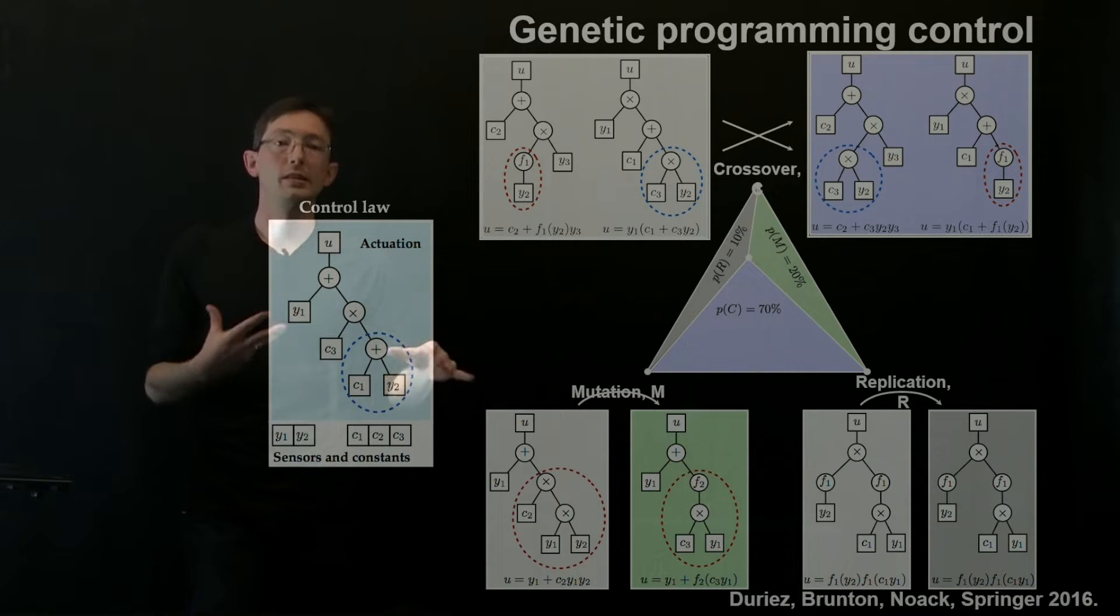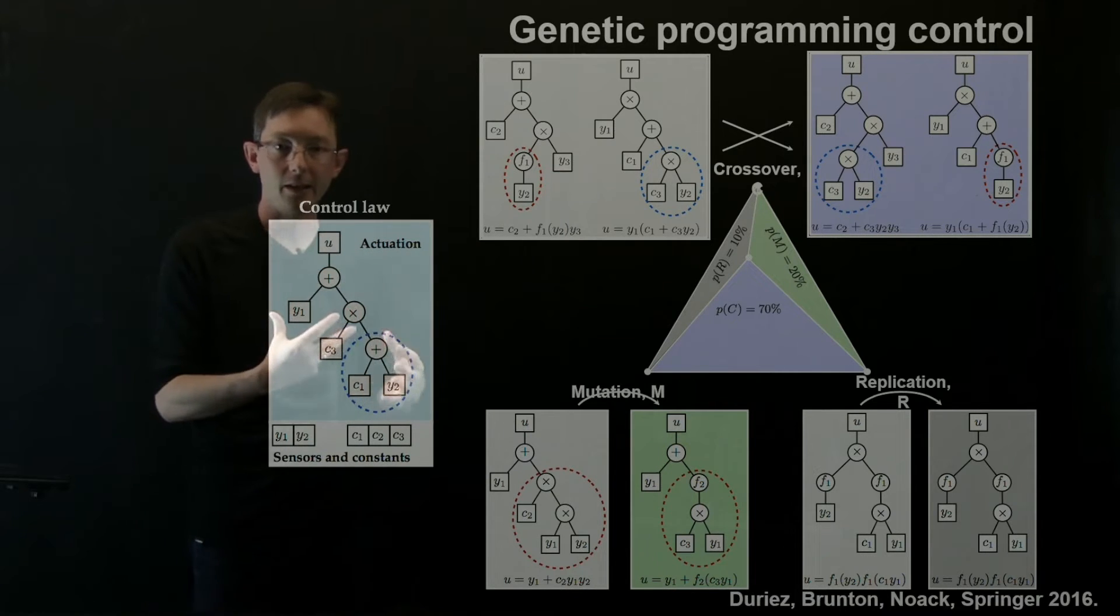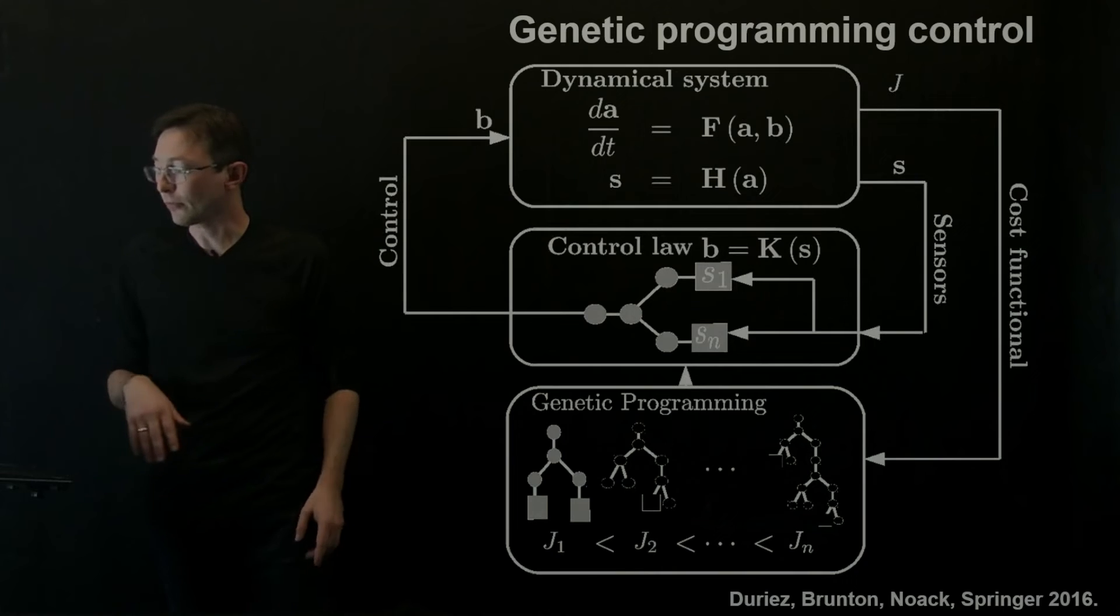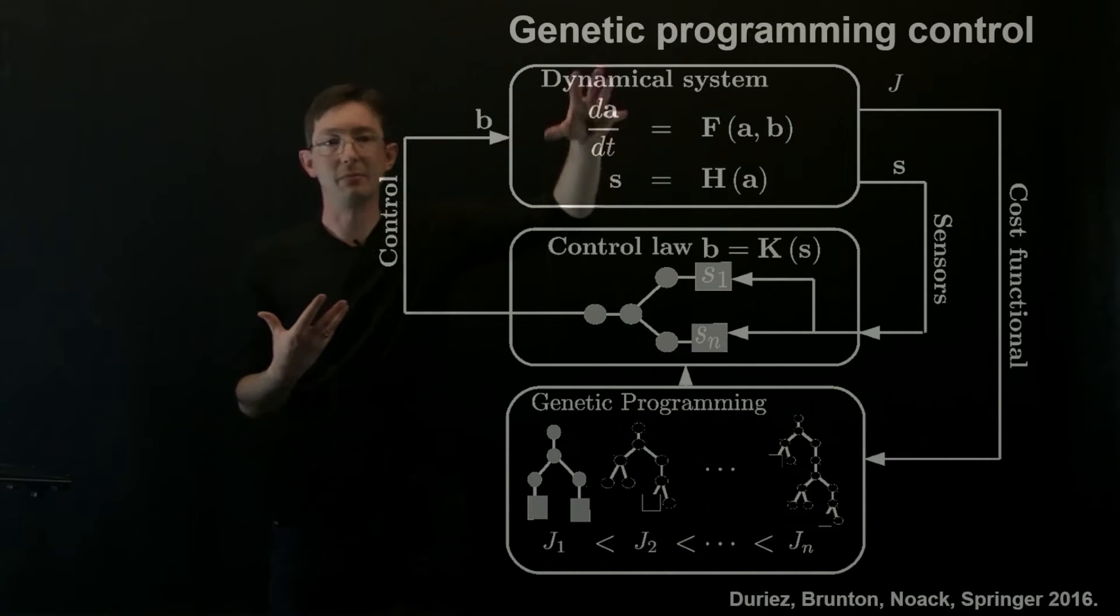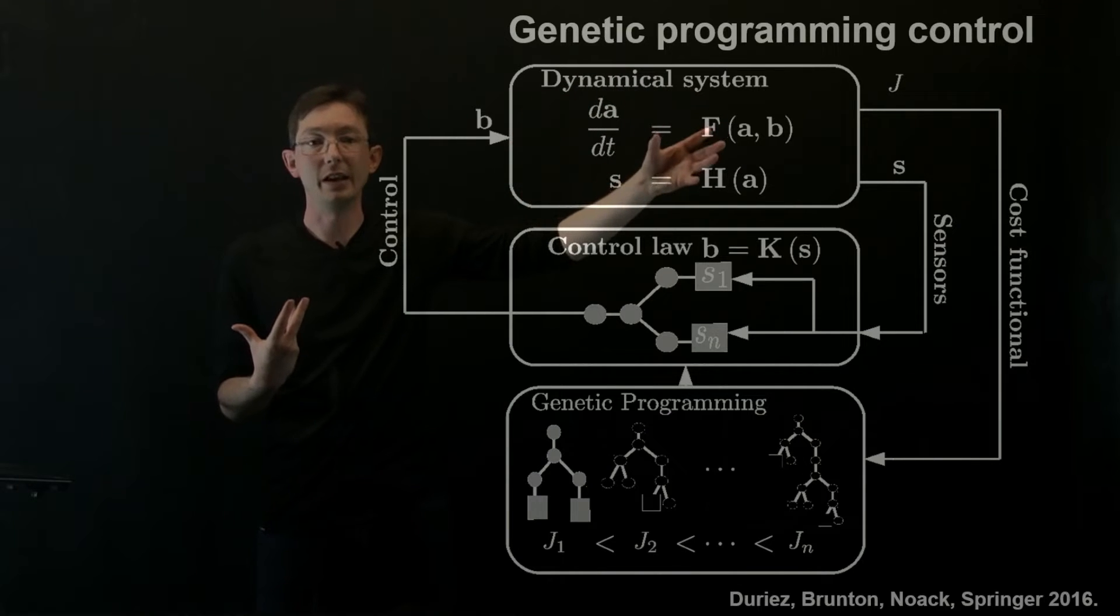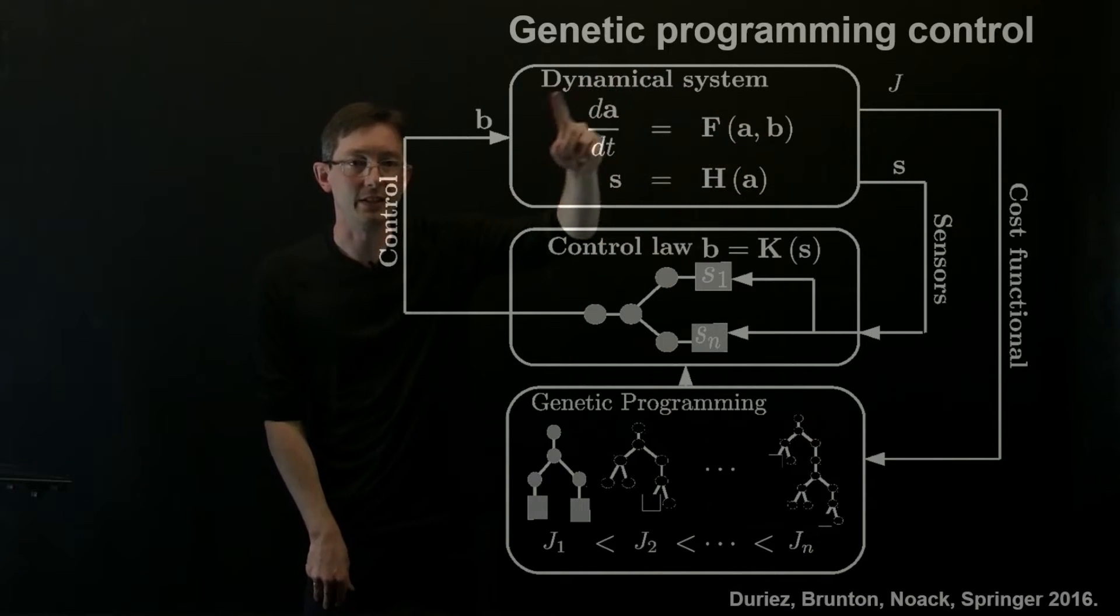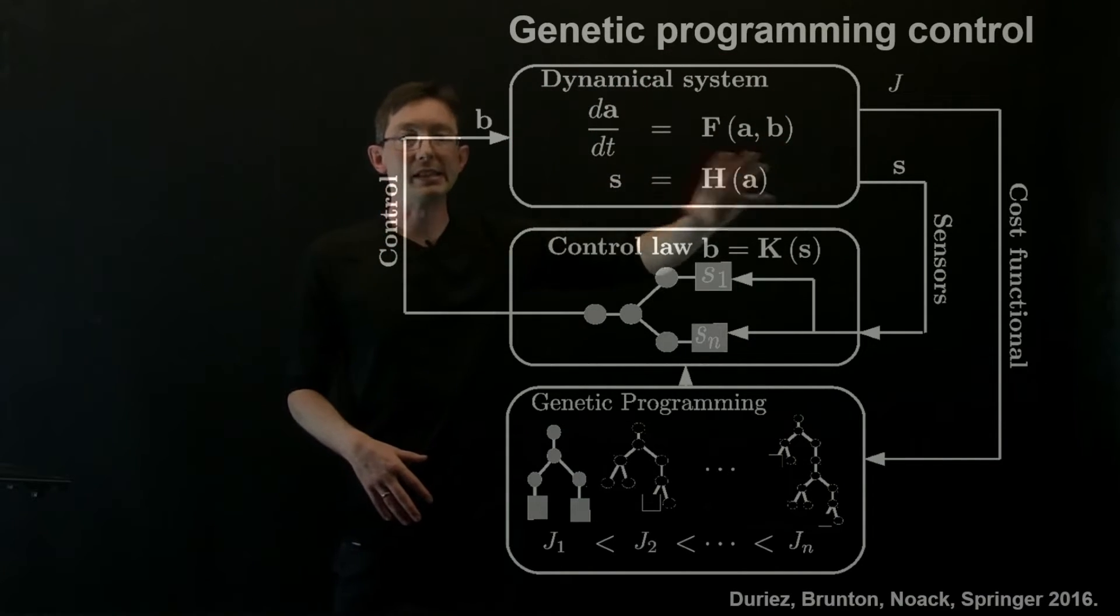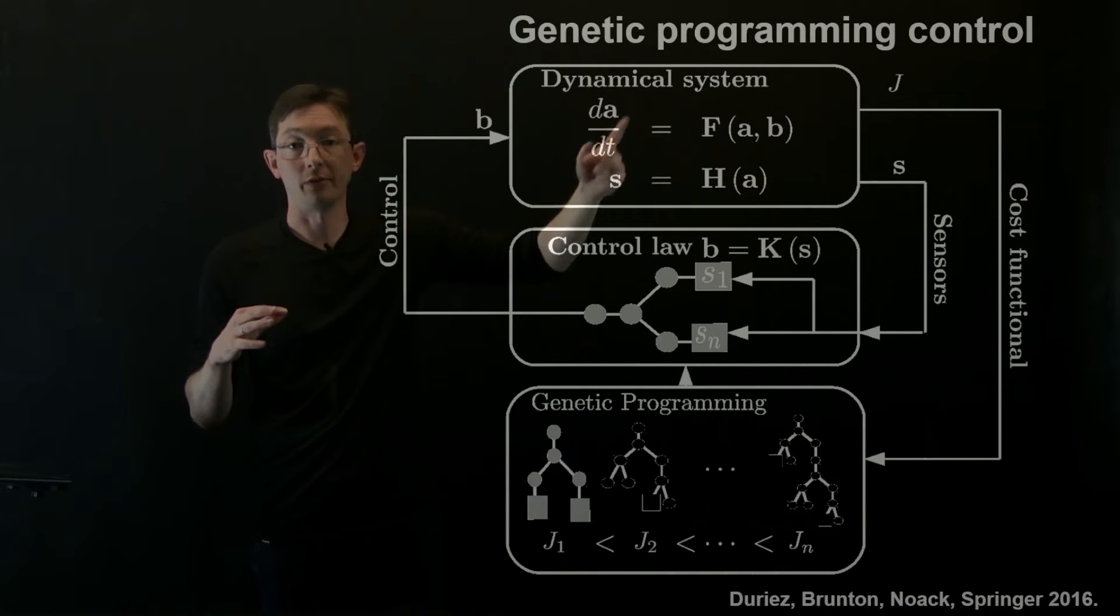Those are the basic genetic algorithms that you can then use to tweak these control laws and try to refine them over successive generations. And what we'll then do is we have some dynamical system. Maybe this is an experiment or a simulation or something where I can test control laws. And I have it here written down as a dynamical system with an actual F. But in general, this is a black box experiment and you don't really have a good model for it.